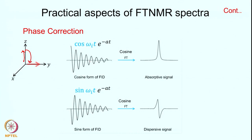If you Fourier transform the cosine FID it produces a pure absorptive signal, and if you Fourier transform the sine FID it produces a dispersive signal. This is when pulses are perfectly applied so that the magnetization rotates exactly along the y-axis.